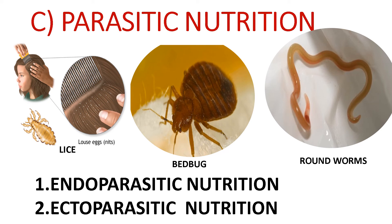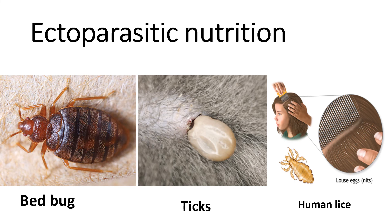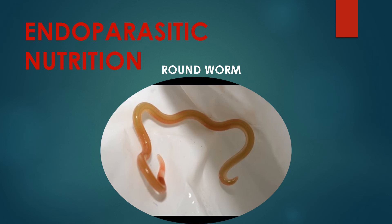In parasitic nutrition, we study ectoparasitic and endoparasitic nutrition. The word 'ecto' means outer, so ectoparasites live on the outer body surface of the host. For example, bed bugs, ticks, and human lice are ectoparasites. Ticks are found on the body surface of dogs or cattle like cows, buffalo, and goats. The word 'endo' means inside, so endoparasites live inside the body of the host. For example, roundworms like Ascaris and tapeworms live inside the human intestine and suck their nutrition.